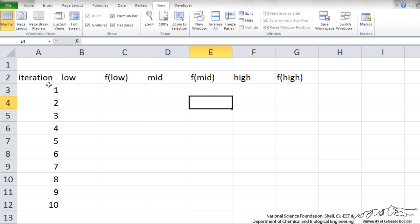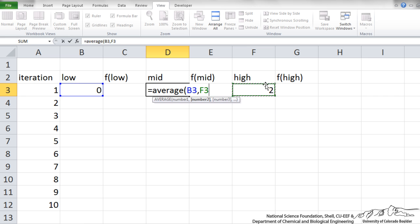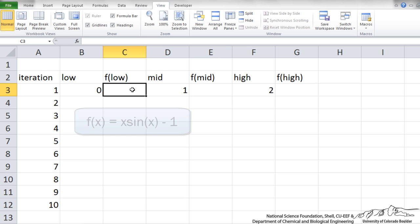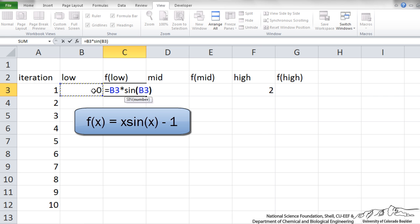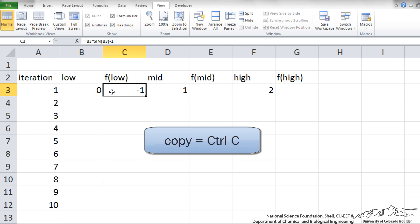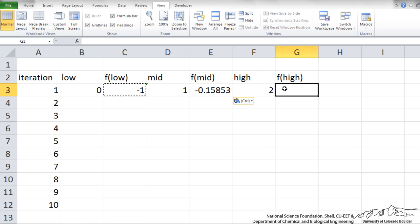So I have just set up a template here for the bisection method. We can start with our low and our high bounds of our first interval. The midpoint is just going to be the average of the low and high. We want to calculate the function of the low, x times sin of x minus 1. I can copy that formula into the, calculate the function at the midpoint and at the upper bound. Because it is relative referencing I can just paste.